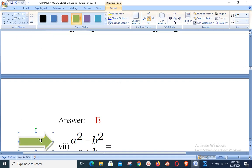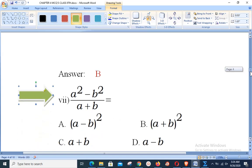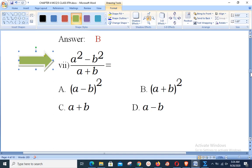Next, objective number 7. You are to answer: what is the result of a square minus b square over a plus b? As you already know that a square minus b square is a plus b into a minus b, so one a plus b will cancel with the denominator a plus b, and your answer will be simply a minus b. That is option number D.